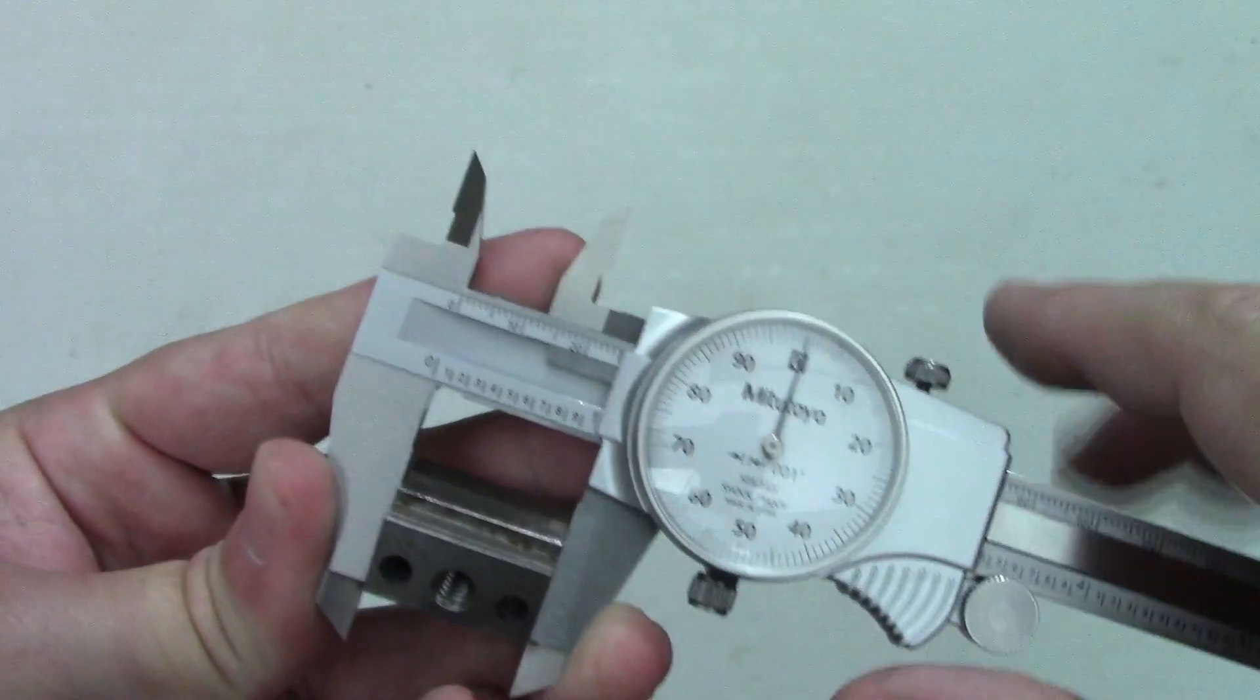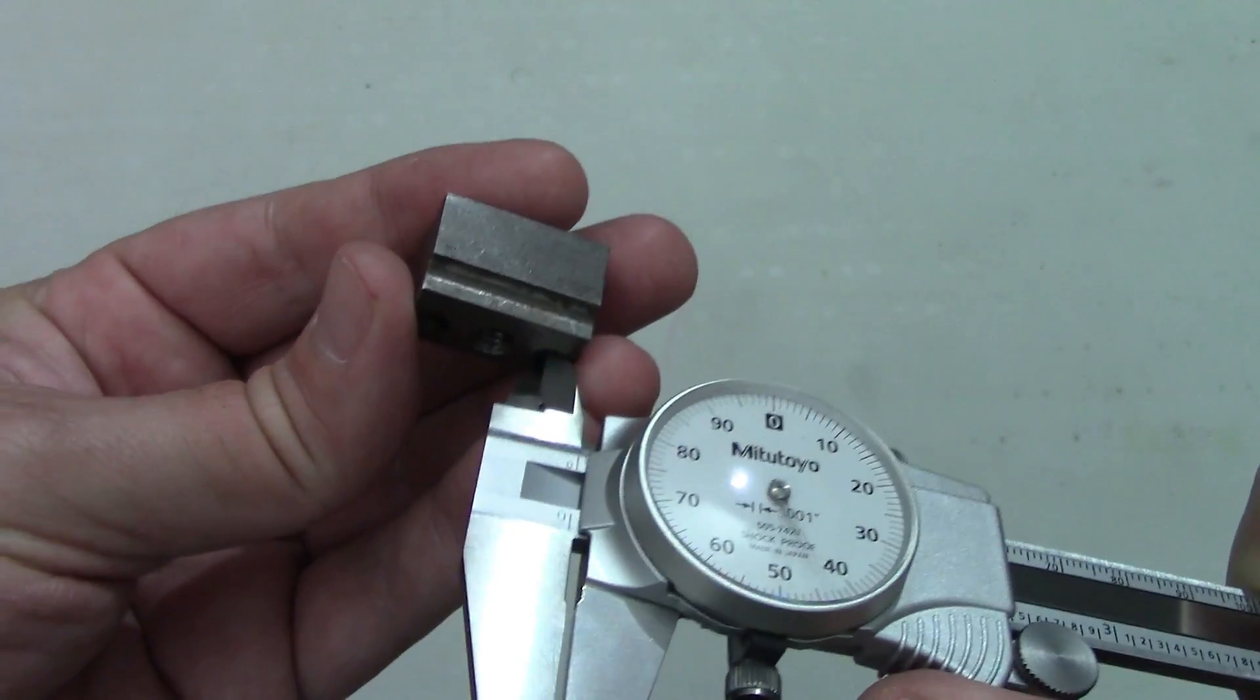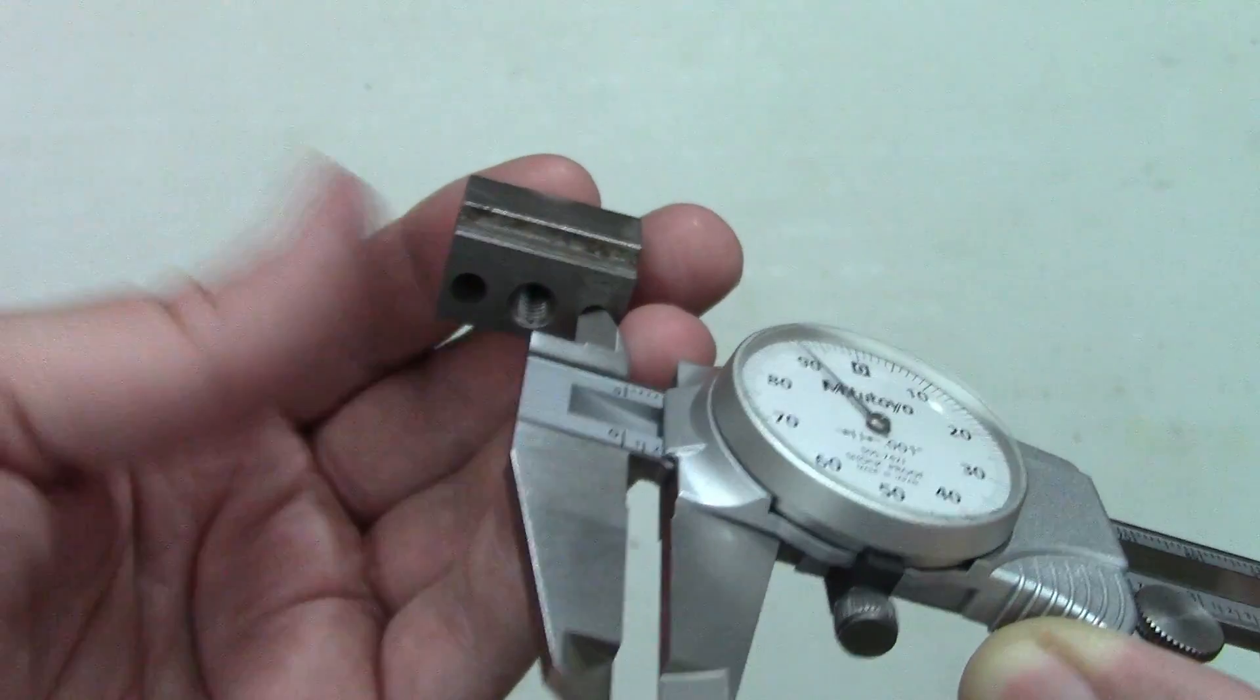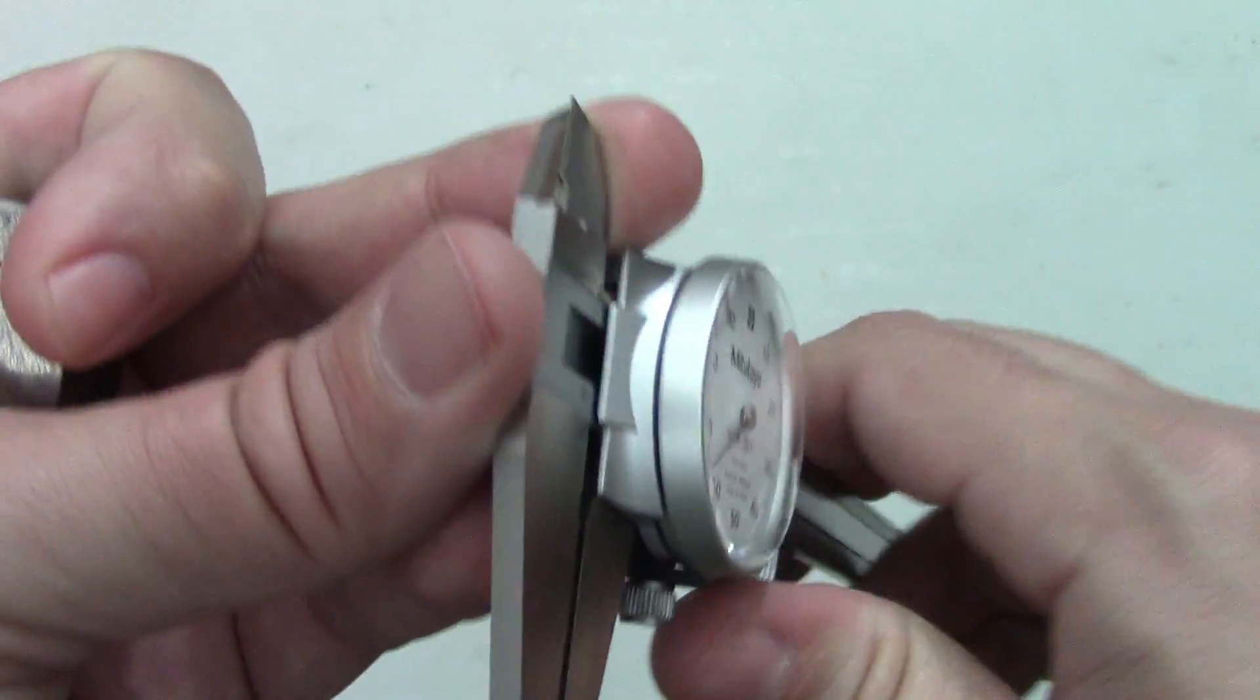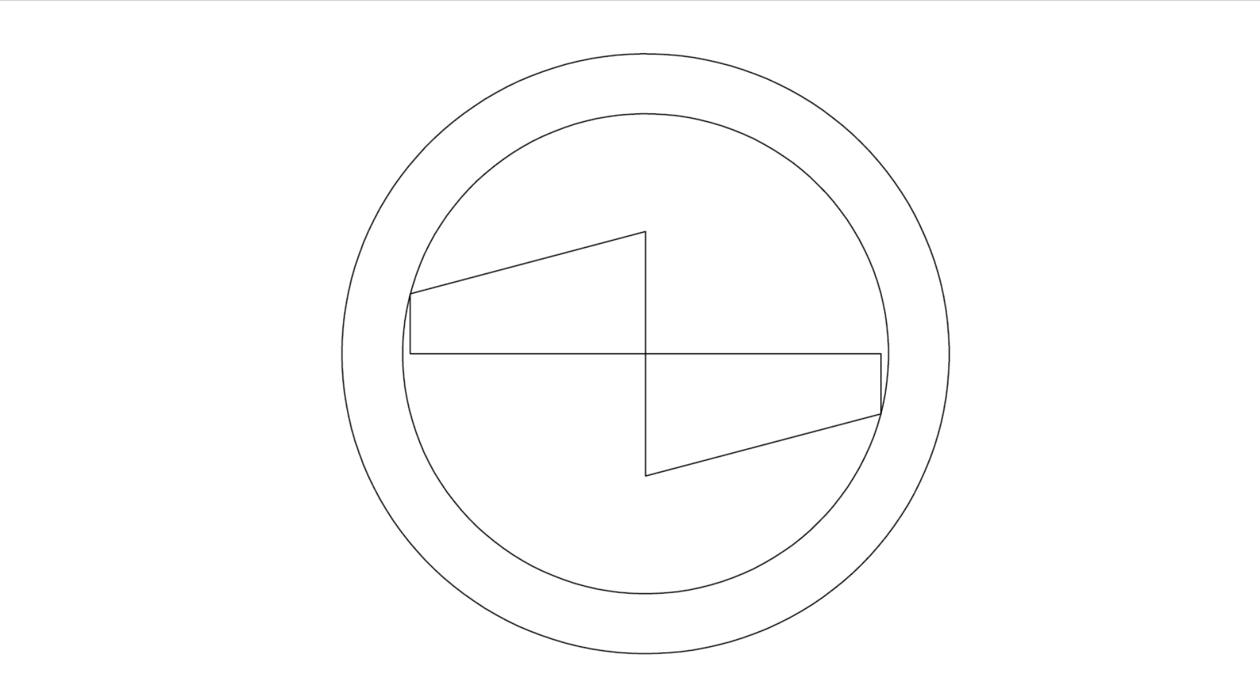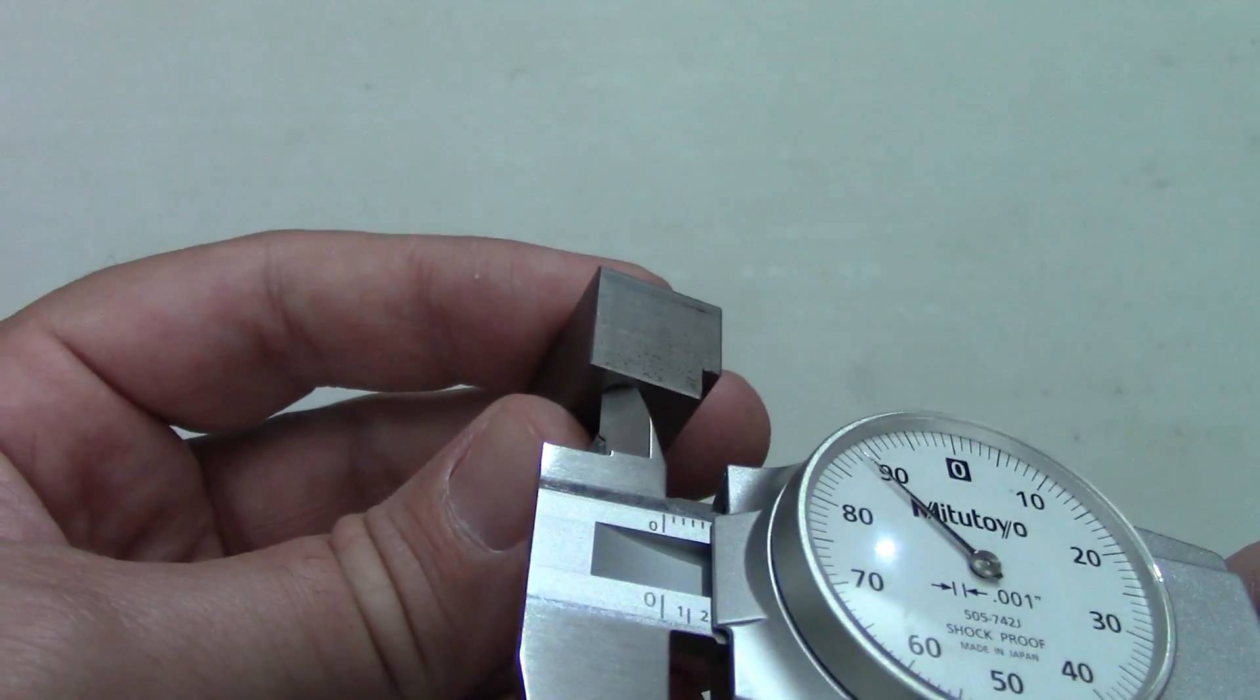The small jaws up on top are used for measuring internal features although you should be aware that this is not particularly accurate for measuring holes smaller in diameter than about one inch or twenty five millimeters. Your measurements will come out smaller than they actually are because the jaws have a little bit of a flat on the edges. These will contact the diameter of the hole across a cord of a circle like this. This issue is much more pronounced the smaller the diameter of the hole is.